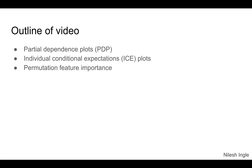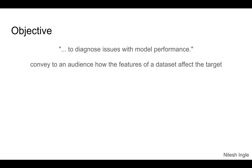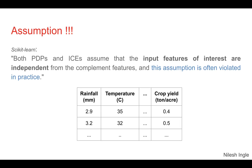The objective with all these methods is to find an easier way to communicate how features affect the target values, or to identify any model performance issues. One important assumption with these methods is that each feature is considered to be independent of other features when comparing it with the target.